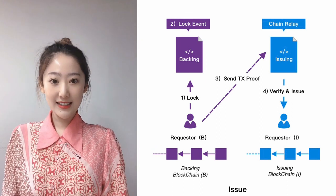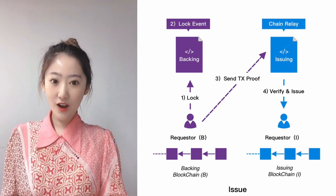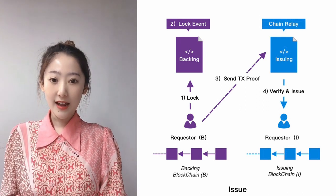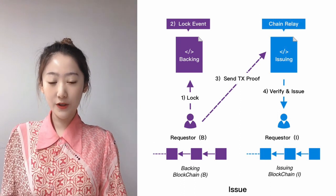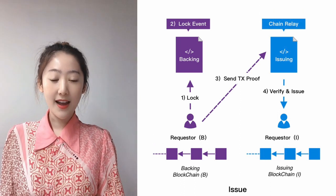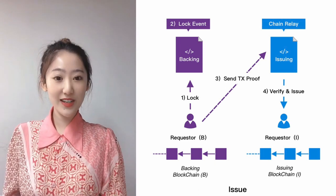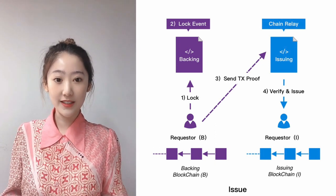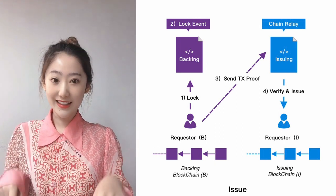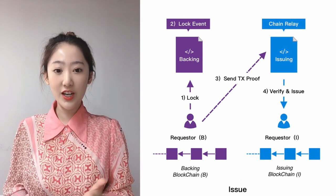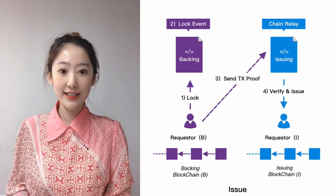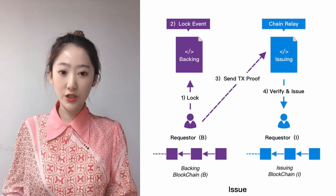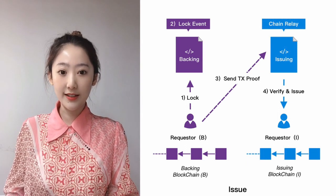The user — we call the requester — sends his asset to the backing contract on the backing chain to lock up his tokens. Then he submits the transaction info to the issuing contract on the issuing chain. It's like saying: 'Hey issuing chain, here is the proof of locking my asset — please issue me the same amount of this shadow token symbol on this issuing chain.' The issuing chain then checks the chain relay to confirm this transaction is included in the backing chain, and if yes, it issues the assets to the requester's address on the issuing chain.